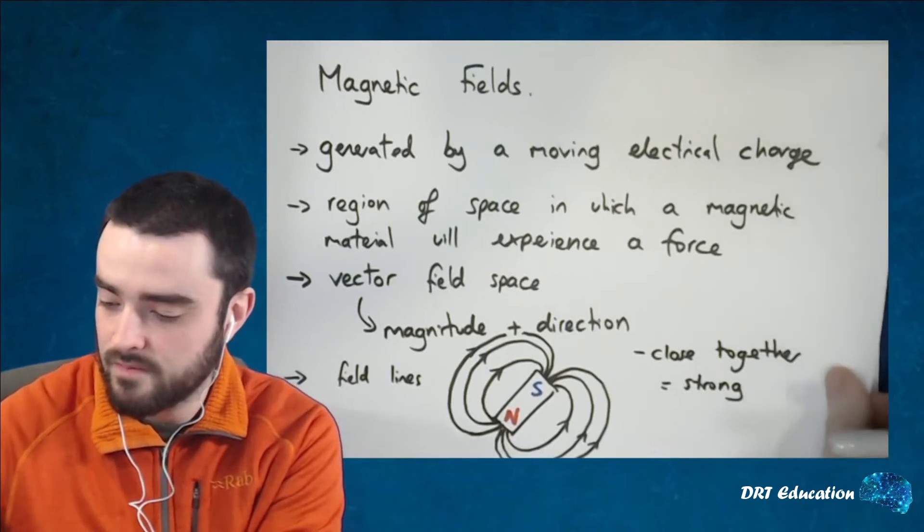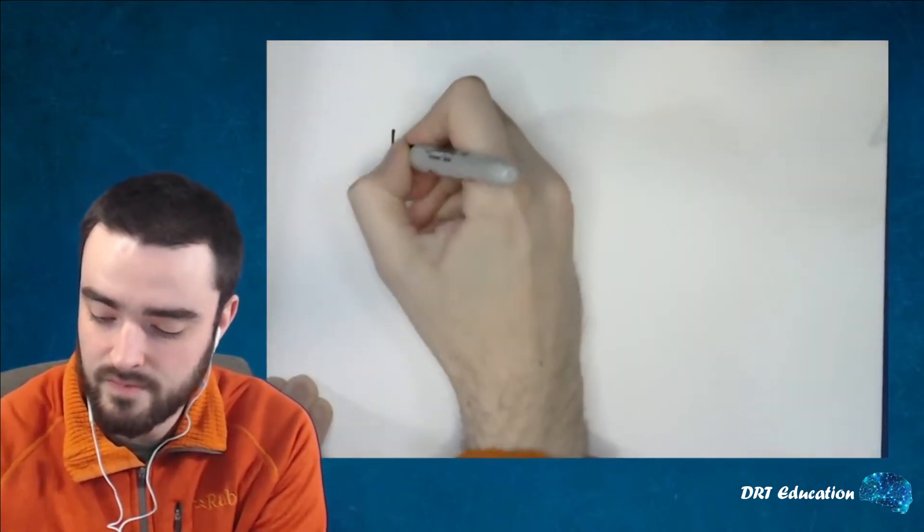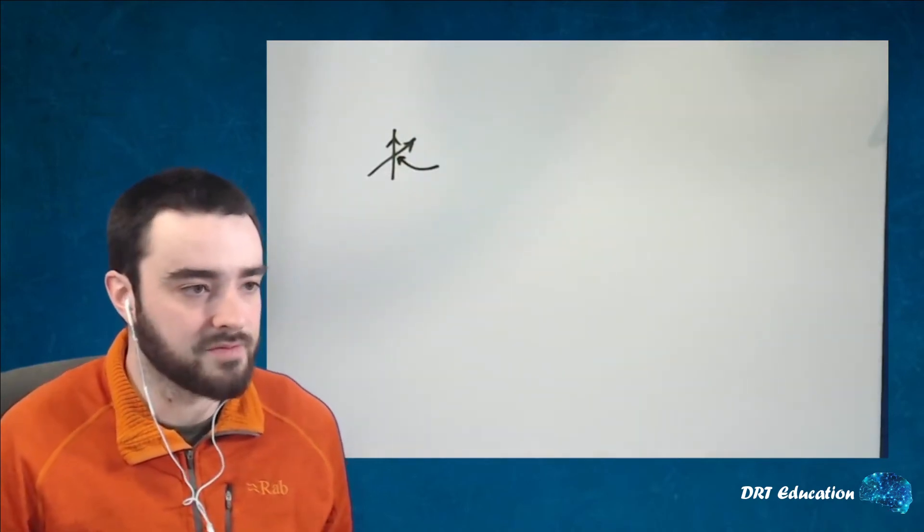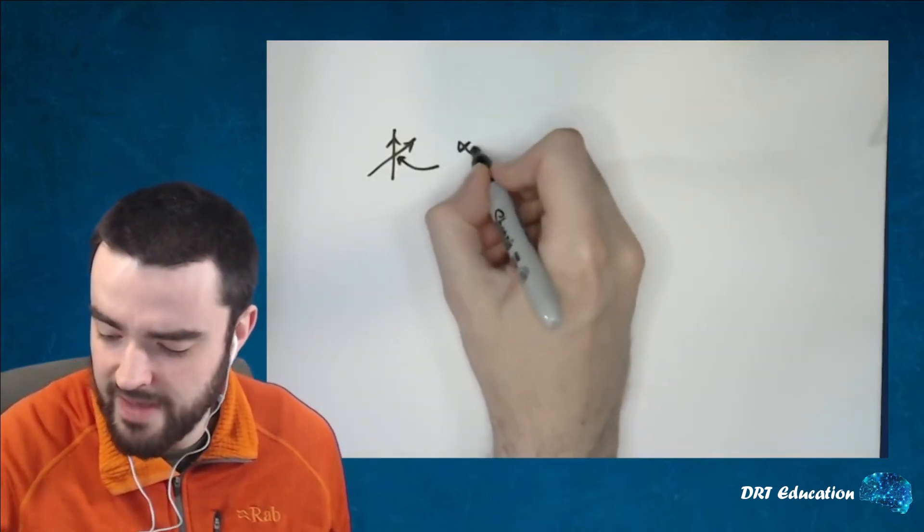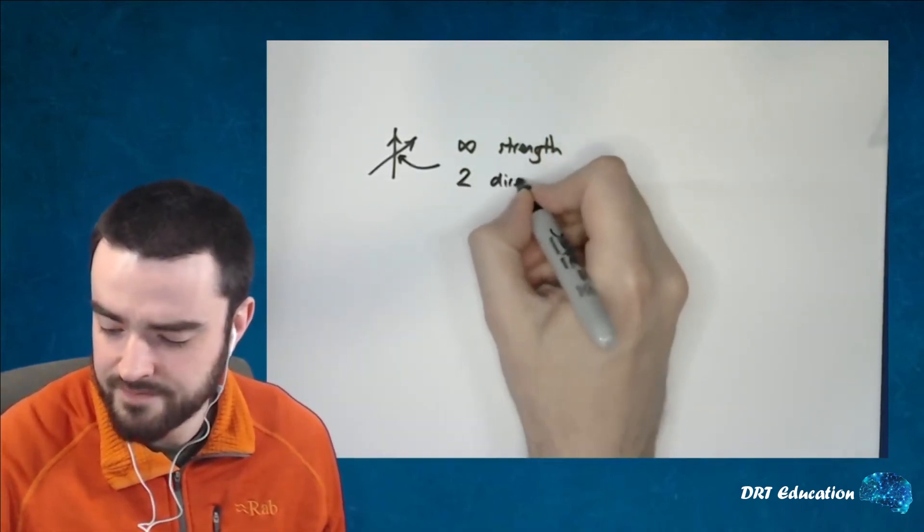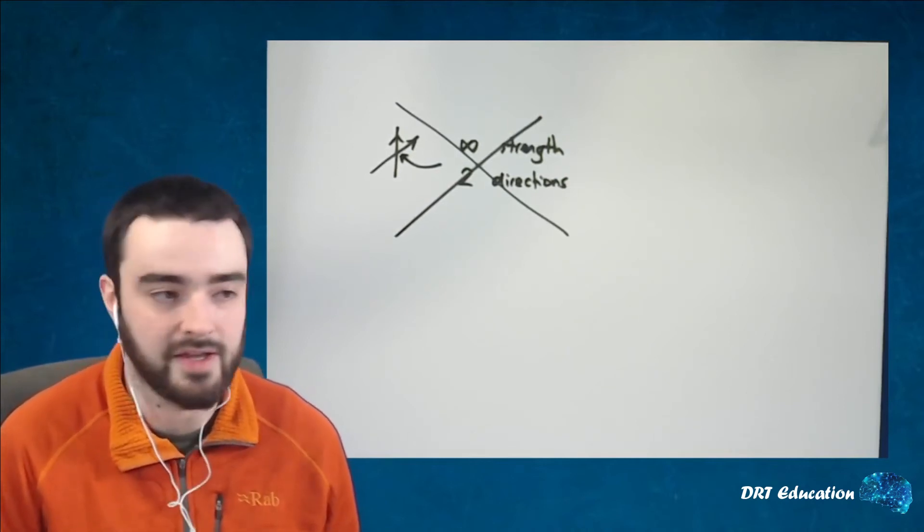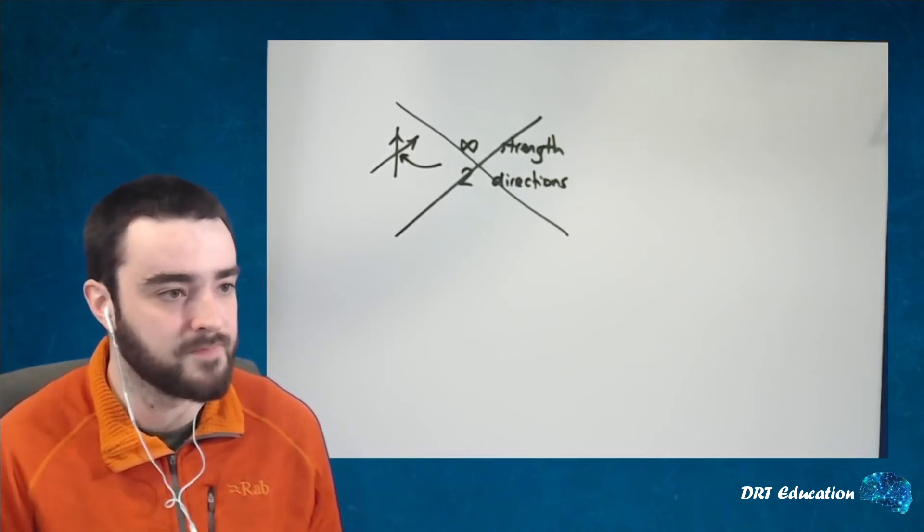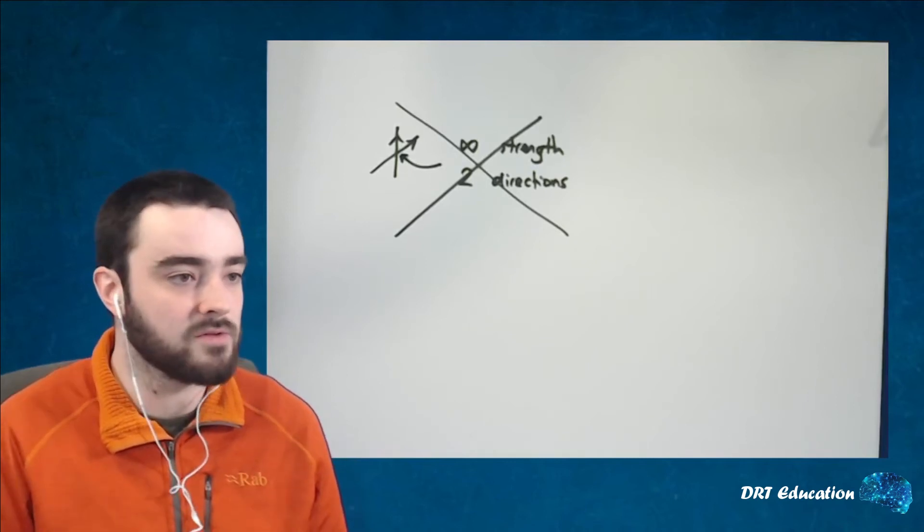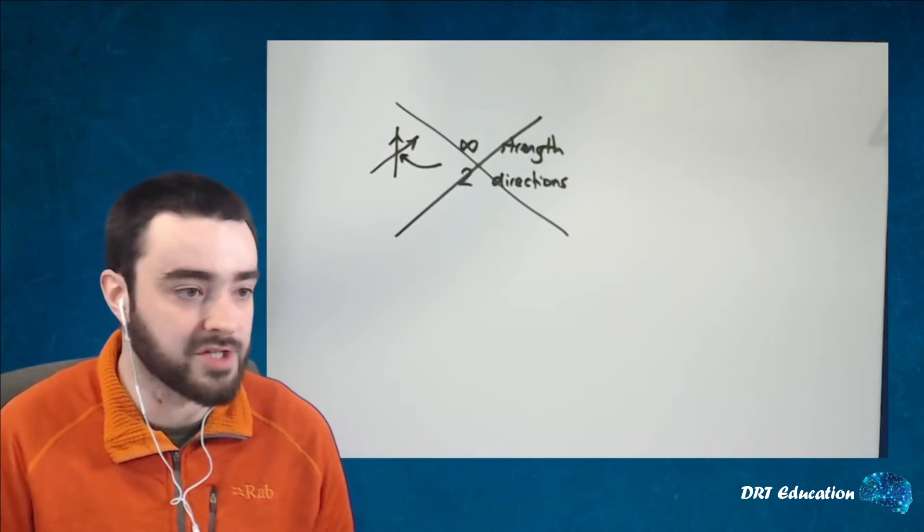Because if you had some crossing field lines, that doesn't actually make any sense. Because at this point, what's the direction? Also, what's the strength? That would have infinite strength, because you've got two field lines really close to each other and two directions. So that just can't happen. You cannot draw magnetic field lines as crossing because it doesn't make any sense. Because every point in that field space will have a direction and a strength. Even if there are competing magnetic fields, they're going to cancel each other out, they're going to superimpose upon one another, and you will have a resultant direction and a resultant force.